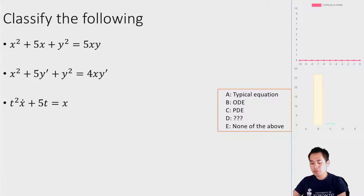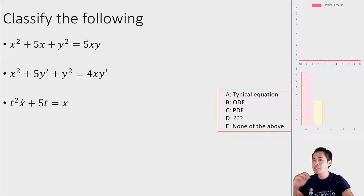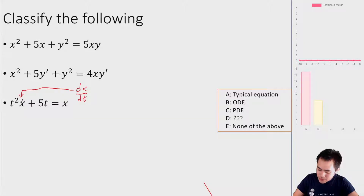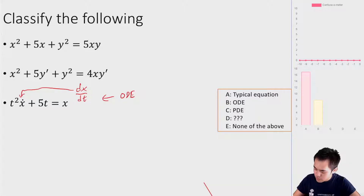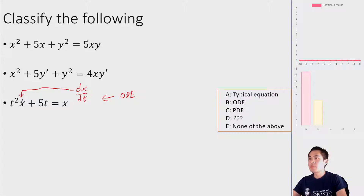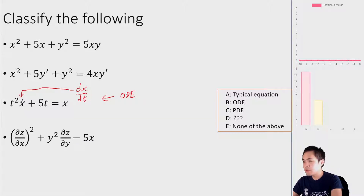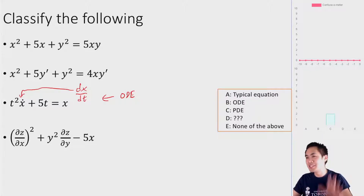Next: t²·x-dot + 5t = x. This is where it's important to recognize differences in notation. x-dot here means dx/dt — it's notation very common in physics for a time derivative. So this does have a derivative and is in fact an ODE, not just a typical equation. The dot notation might not have shown up too clearly, which is another reason I probably won't be using dots too much.